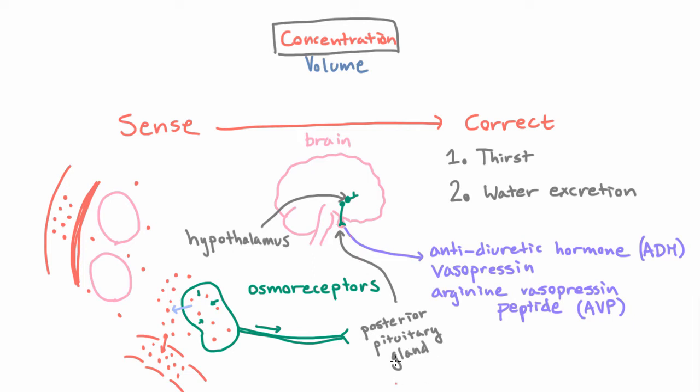So at the posterior pituitary gland, ADH is secreted into circulation. Let's put it in a little blood vessel there. And then it goes all the way through systemic circulation and eventually makes its way to the kidney. And that's where it has its effect to change water excretion.